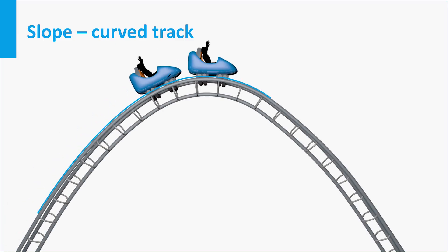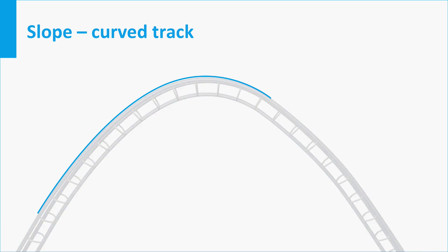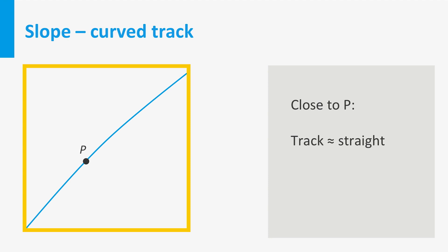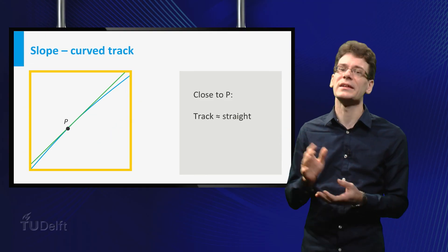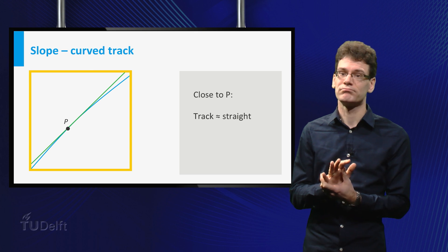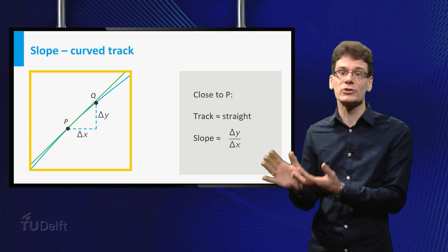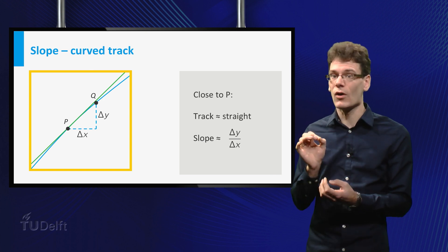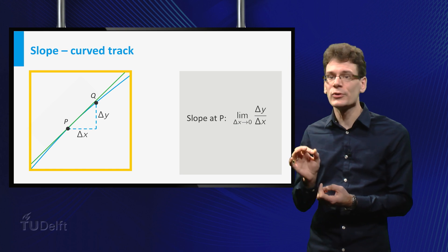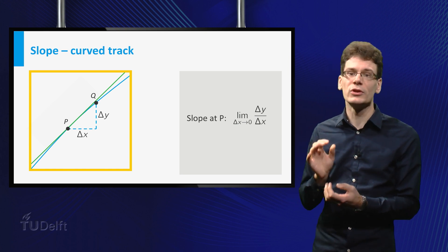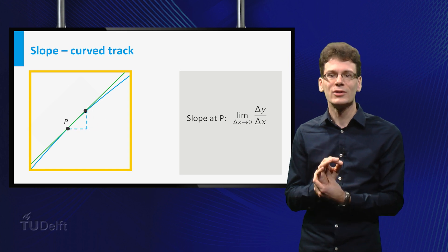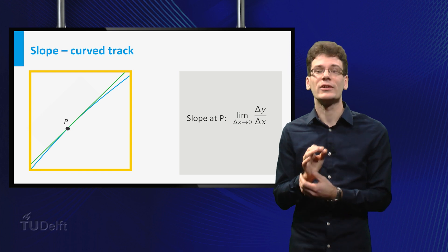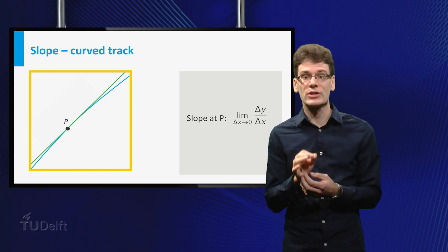What if the track is not straight? Suppose we want to determine the slope at point P. If we zoom in at the track near P, the track will look approximately straight. So if we take Q close to P and take the quotient of the displacements, we get an approximation of the slope of the track. To improve the approximation, we move Q closer to P. The quotient of delta y and delta x approaches a limit value. This value is, by definition, the slope at P.